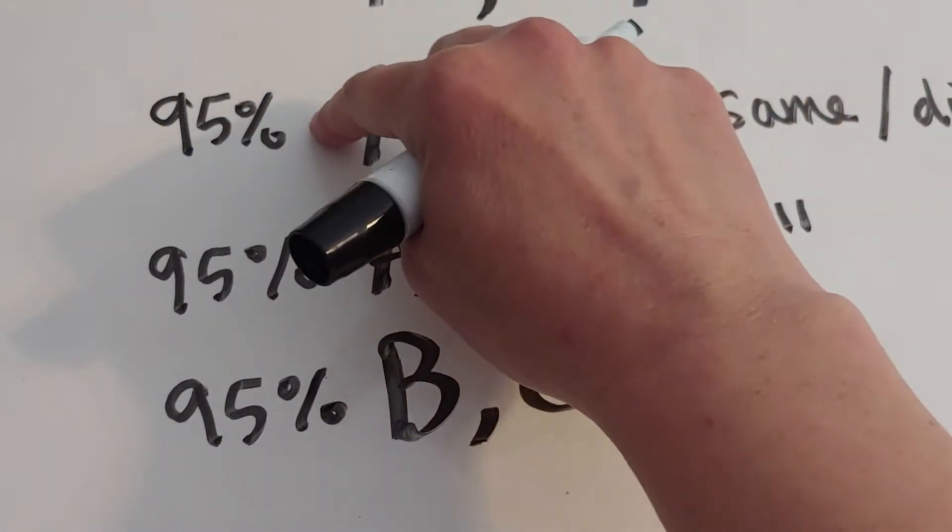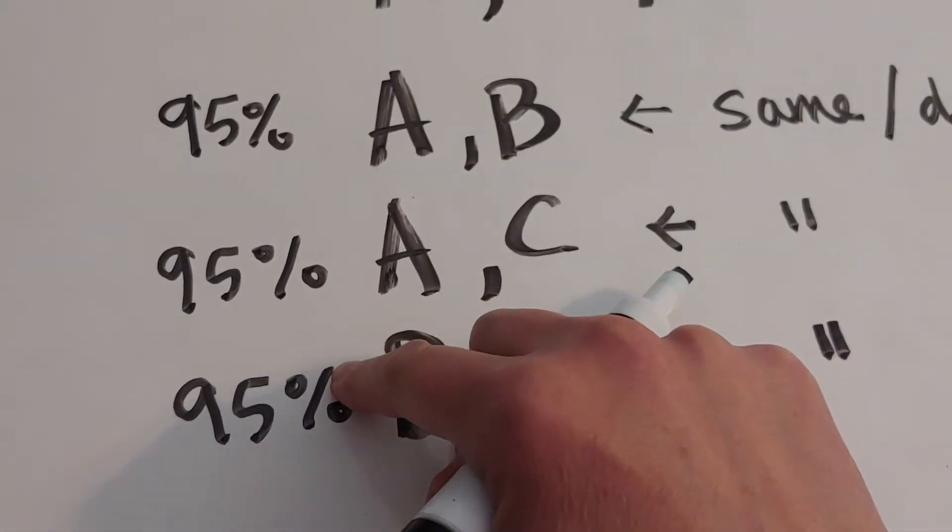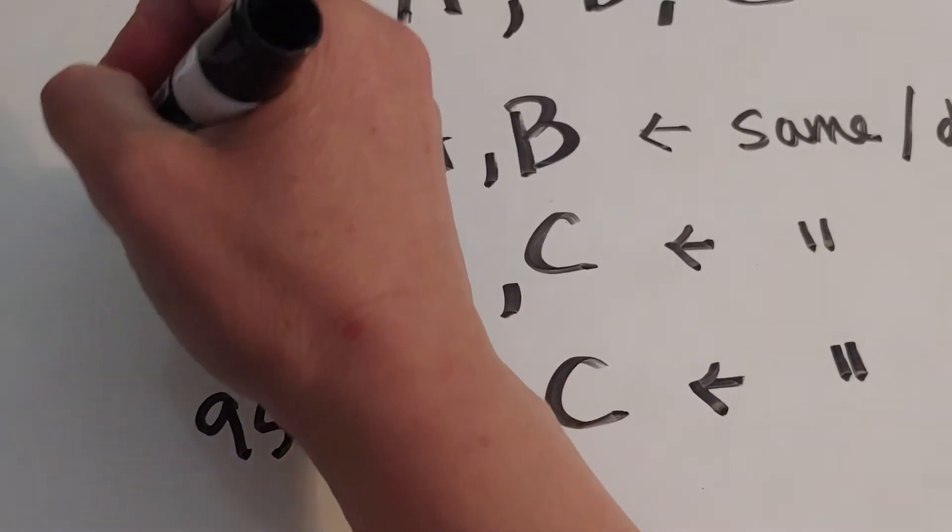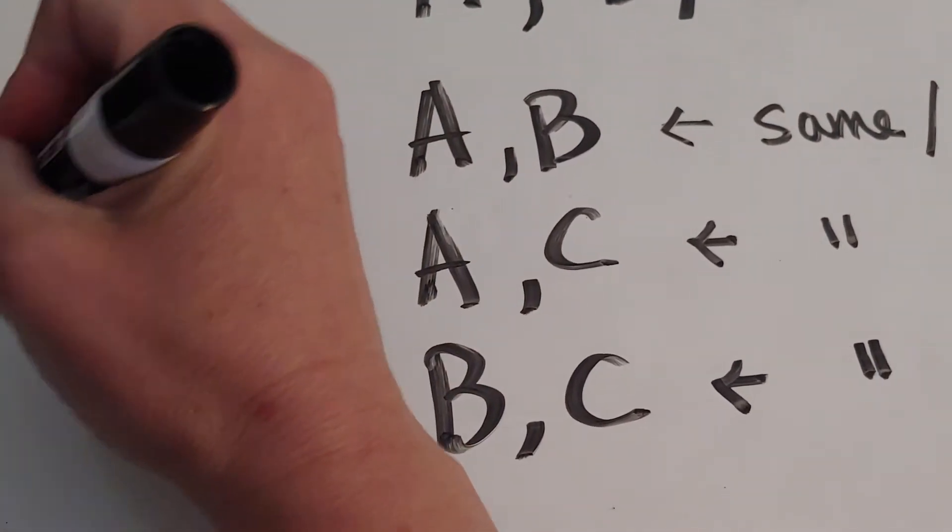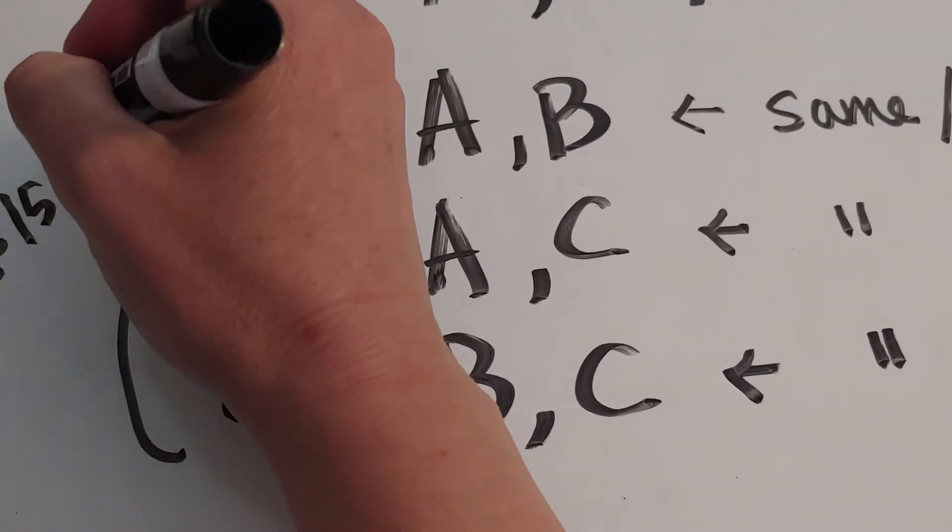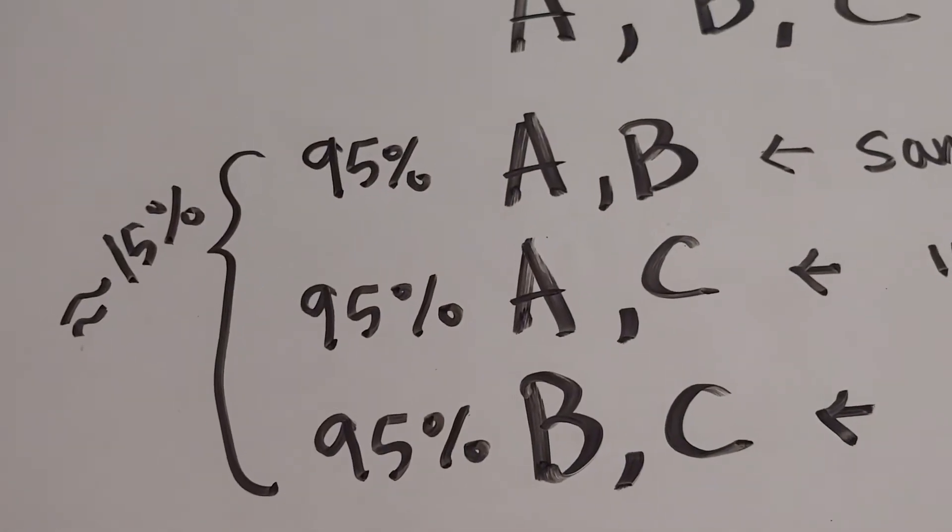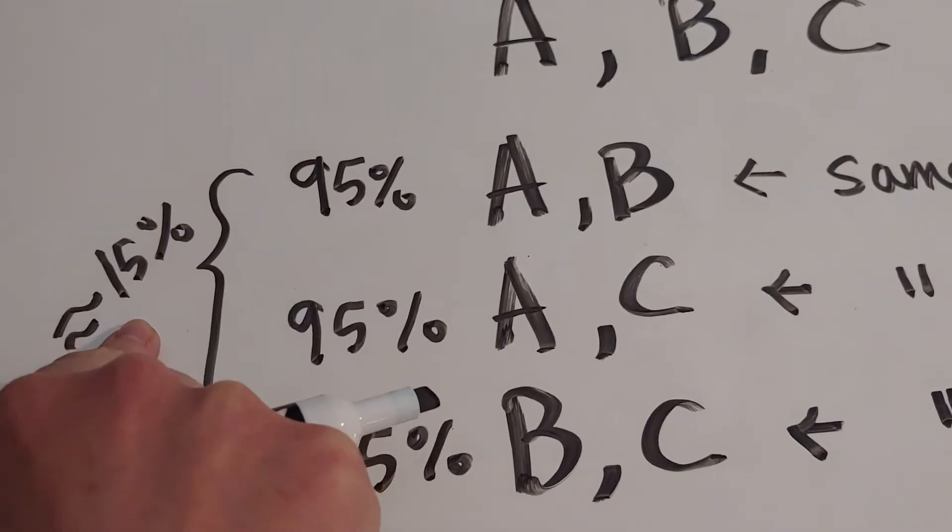I'm going to have 5% error, 5% error, 5% error. So that is going to be basically a total of 15% error. That's bad. We don't want to have that much overall error.